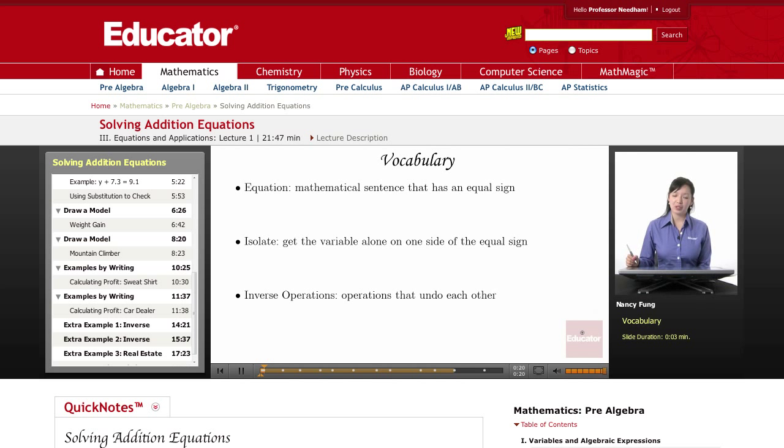There are several vocabulary terms. First, an equation is a mathematical sentence that has an equal sign. So you've probably worked many times with expressions, such as just x plus 3. Well, now it becomes an equation when you put an equal sign and set it equal to another value.